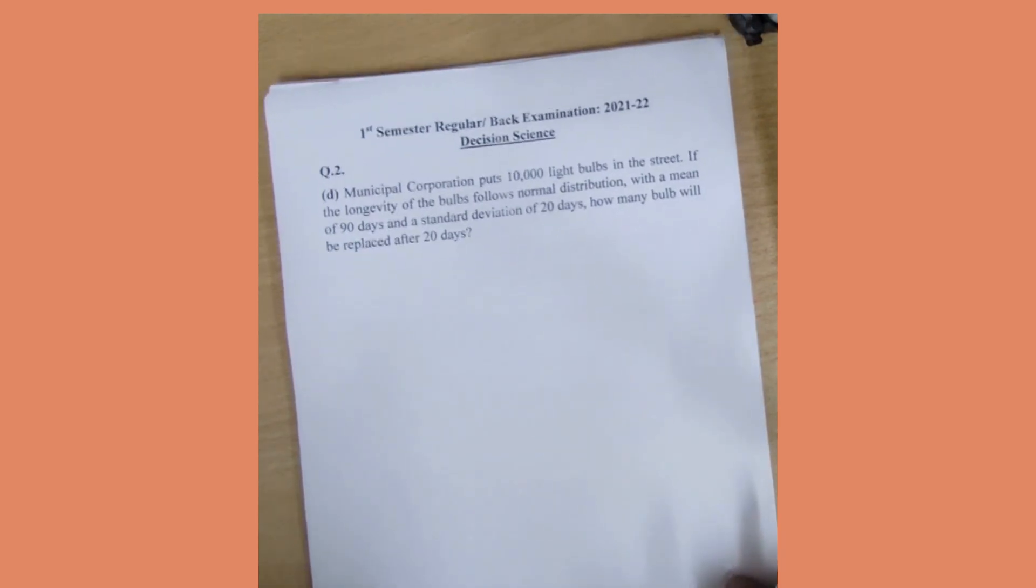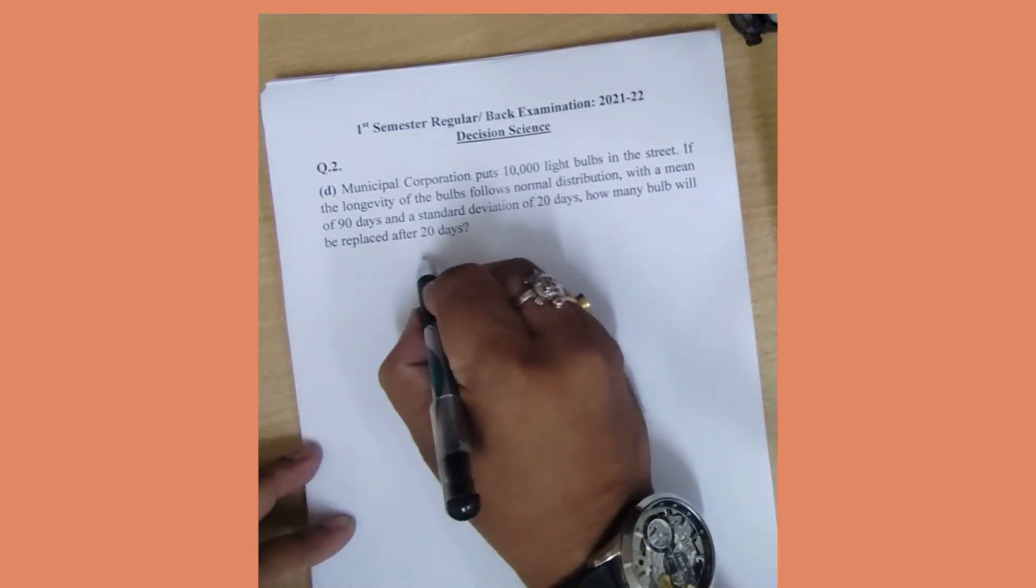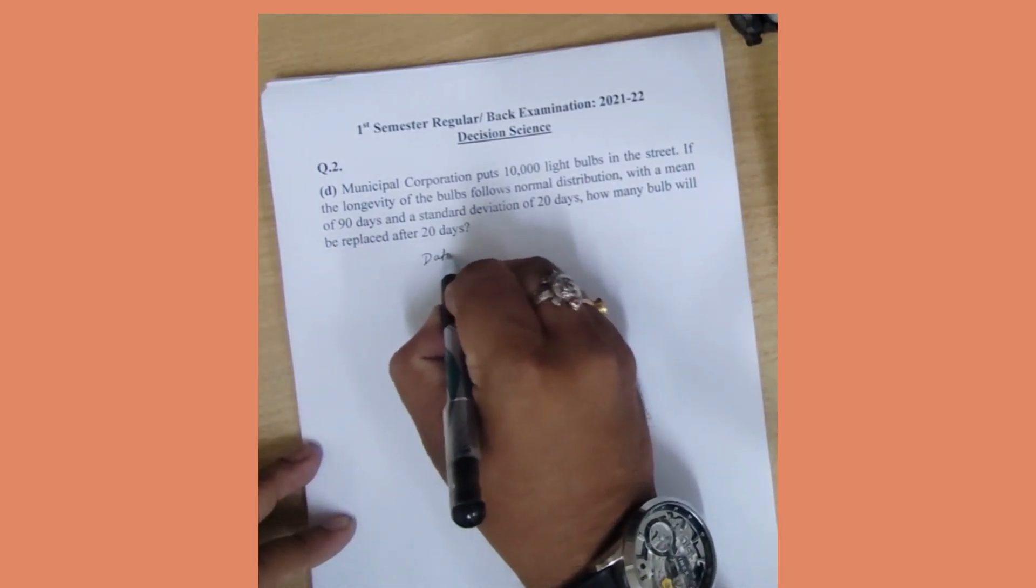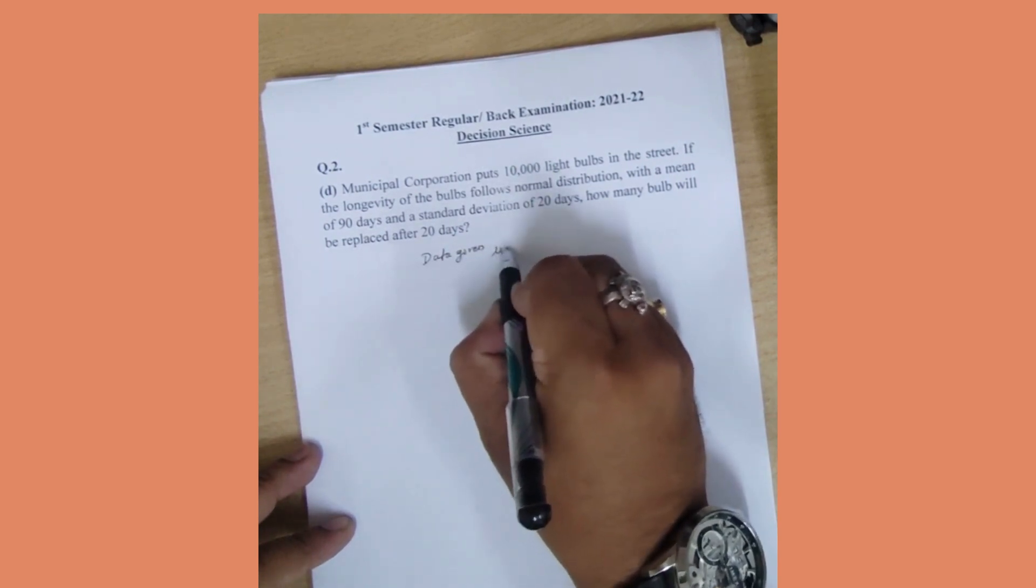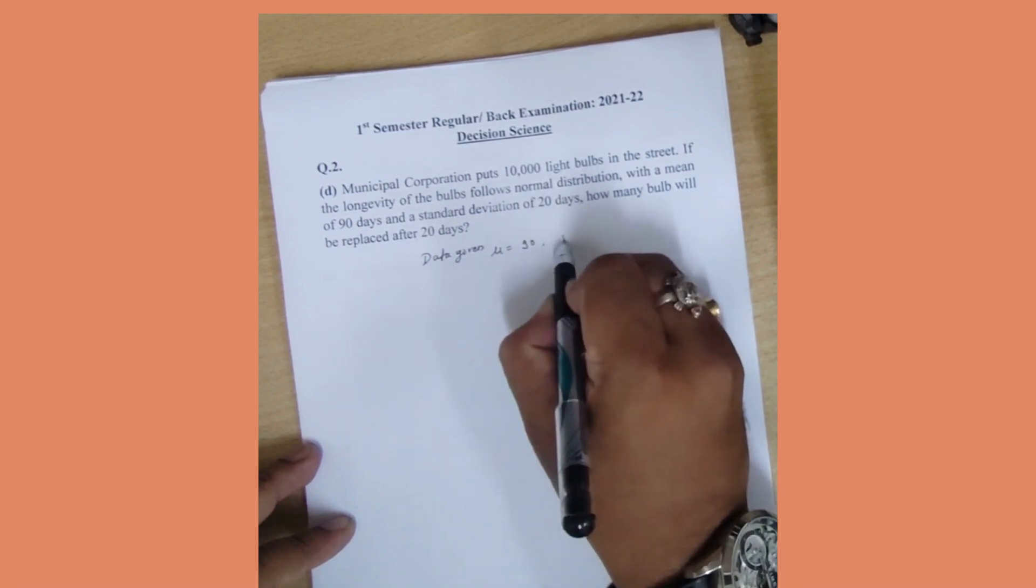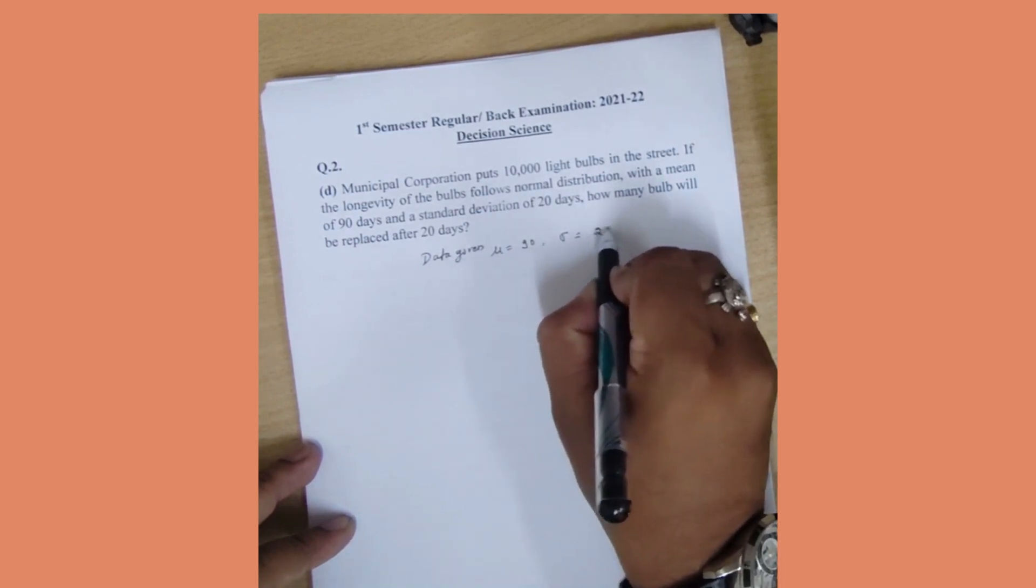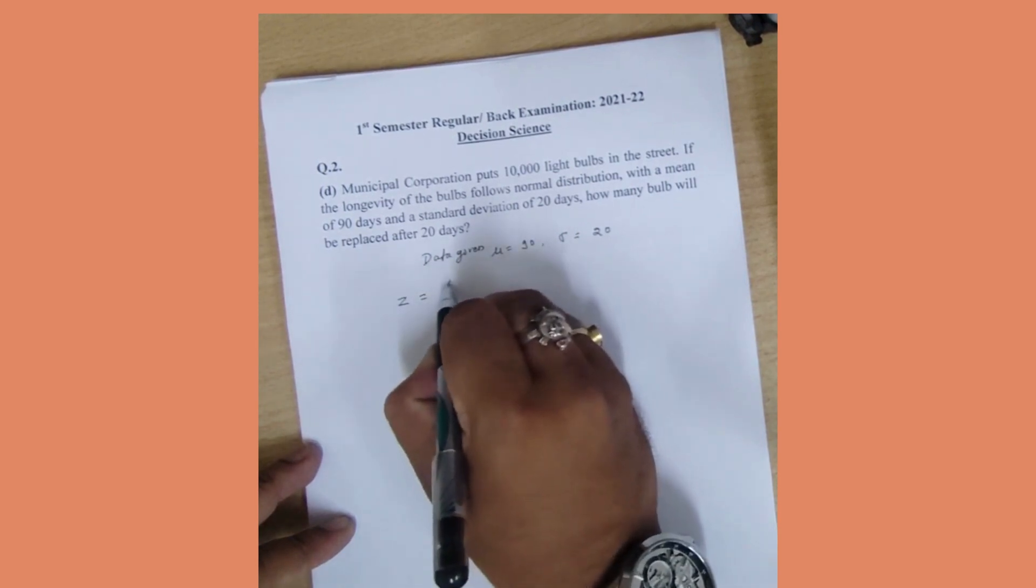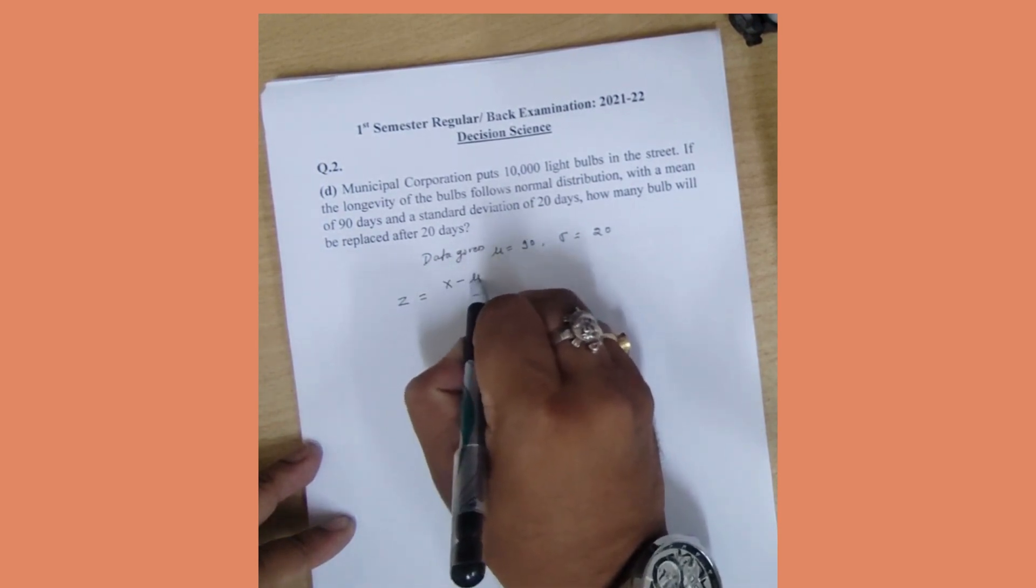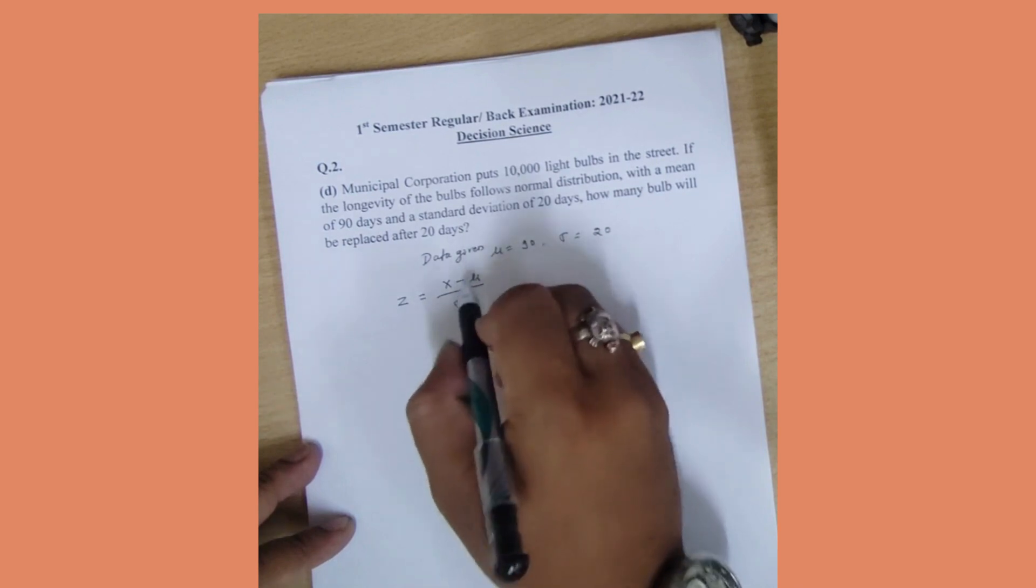First, let us write the given data. That is μ is 90, standard deviation is 20.